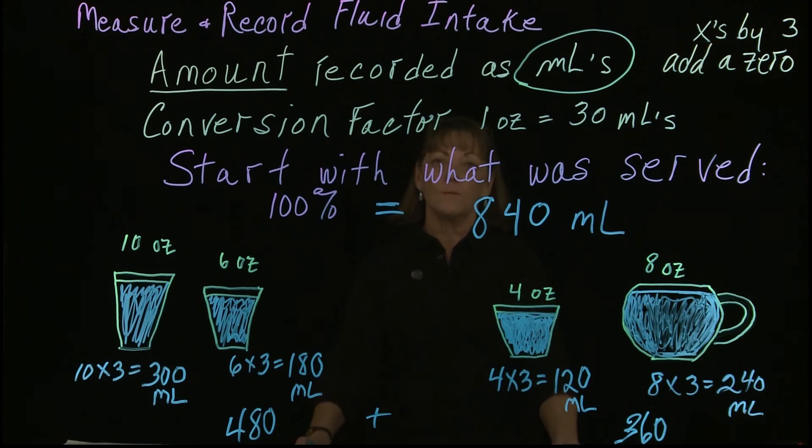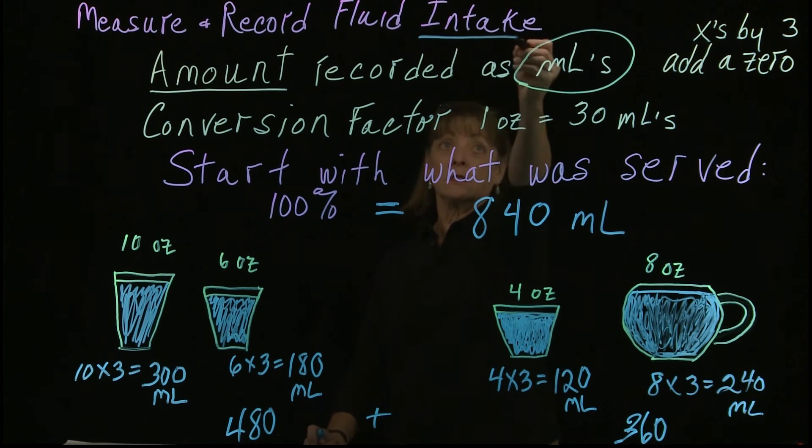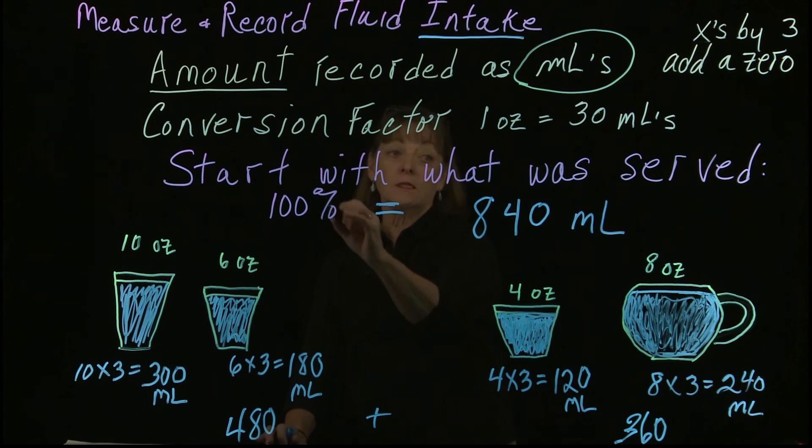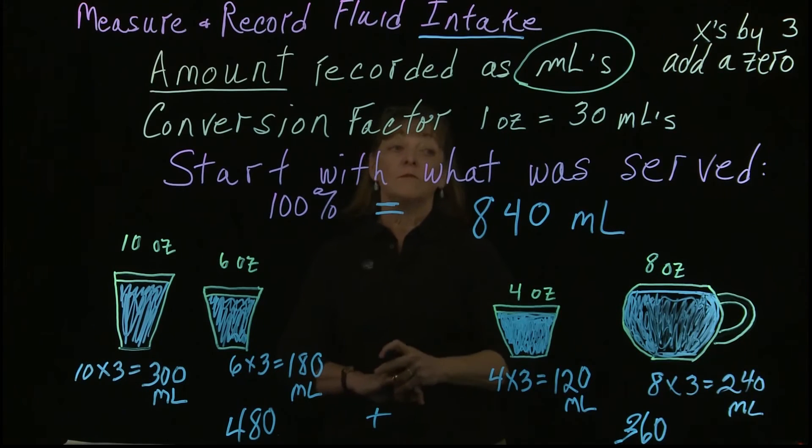And so what we're going to do is compare everything to what they got served. Now, the only way that we can tell what they got inside them, what they drank, what their intake was, is we look at what was left behind on the tray. Did they drink all of this, did they drink part of the container, did they drink none of it? Because when we record, what we are going to write down is the approximate mL's that they took and the percentage of fluids that they got inside.